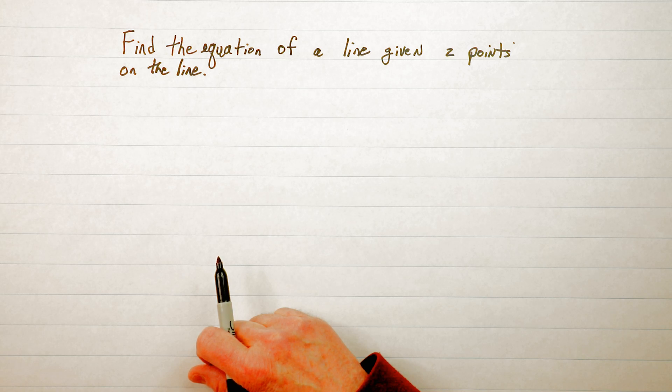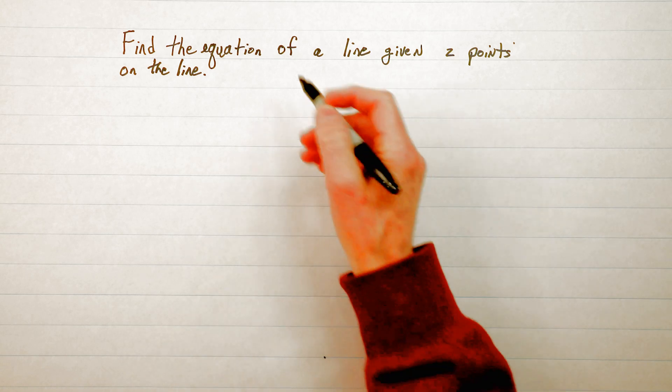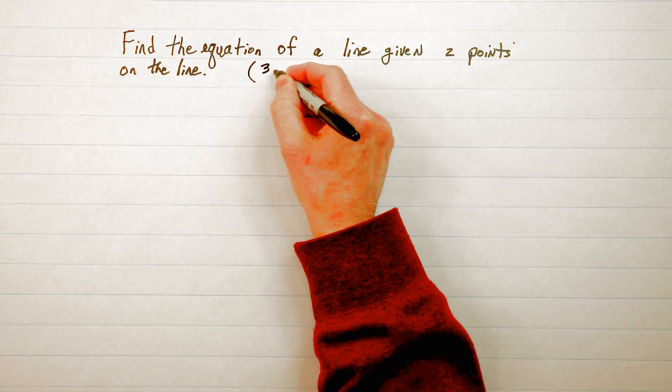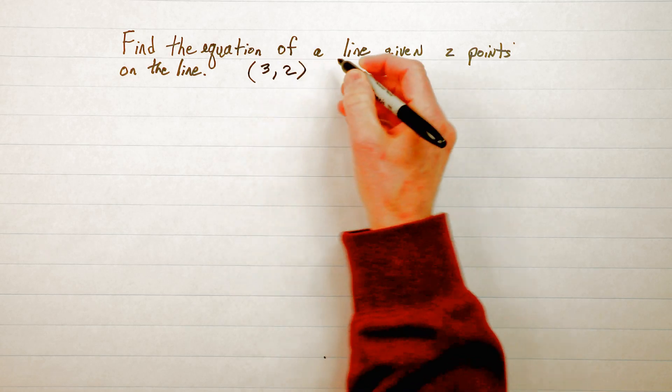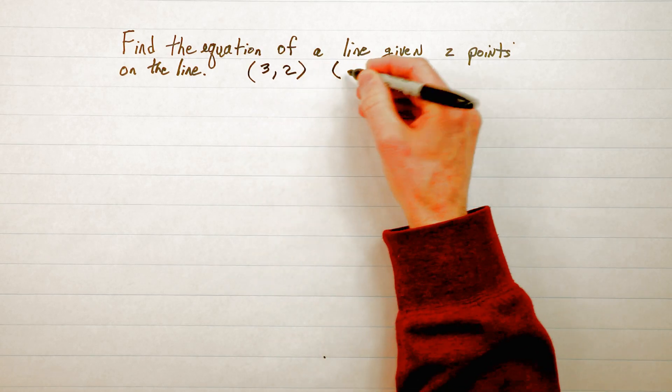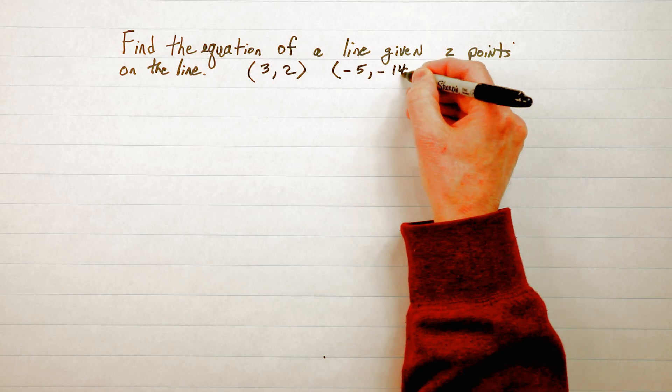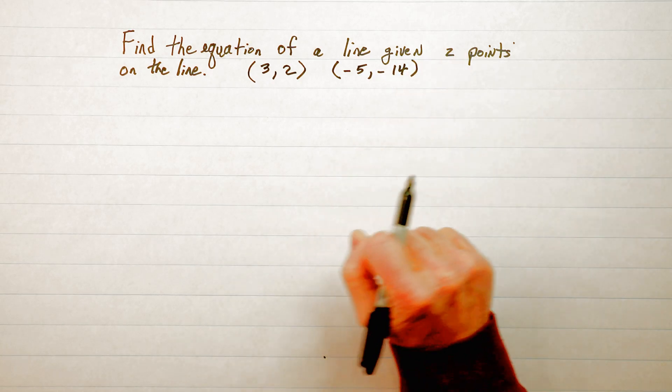Now before we start we need to have two points from the line and I've chosen (3, 2) and (-5, -14). So we'll start there.